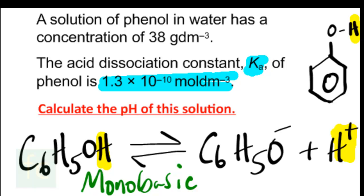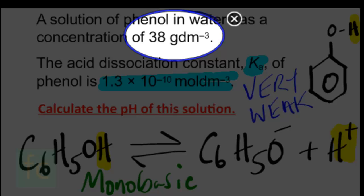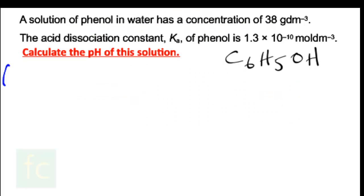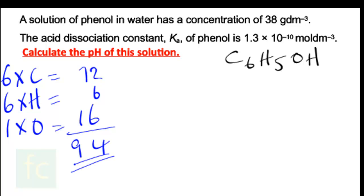We've been given the Ka as 1.3×10⁻¹⁰ mol dm⁻³ — an extremely small value, meaning phenol behaves as an extremely weak acid. The first thing we need to do is convert grams per cubic decimeter to moles per cubic decimeter, by working out the relative molecular mass of phenol: 6 carbons, 6 hydrogens, and 1 oxygen — that gives 72 + 6 + 16 = a relative molecular mass of 94.